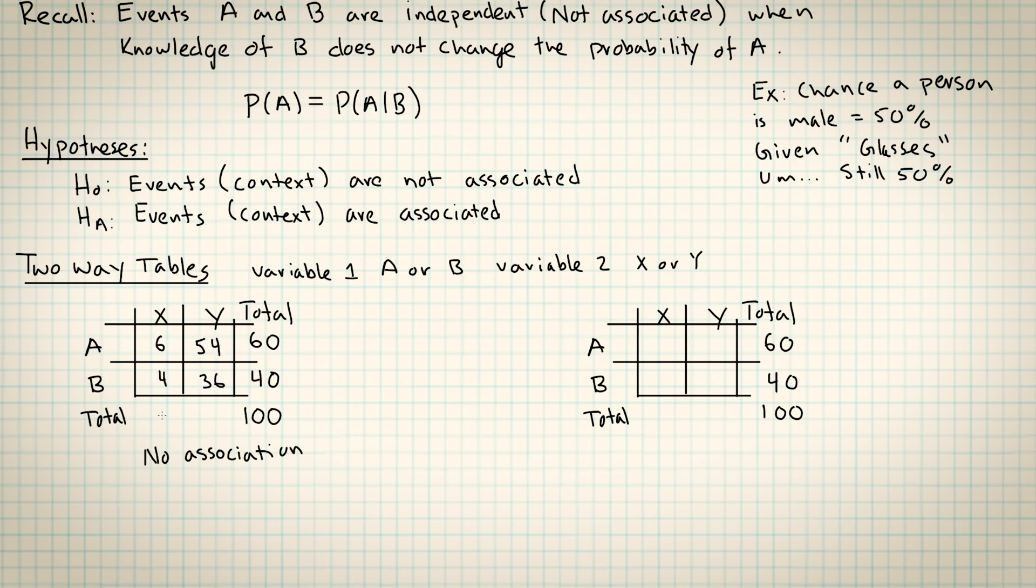It's not so important that the variables are perfectly split 50-50 between the two categories. Here's another example where it looks like there's no association. In category A, the variable X is 10% of the total. There's 60 total people in category A, and 10% of them had variable X. In category B, it's 4 out of 40, so this is also 10%. So what we're looking for when we want things to have no association is that whatever the proportional breakdown in category A is, it has approximately the same proportional breakdown in category B.